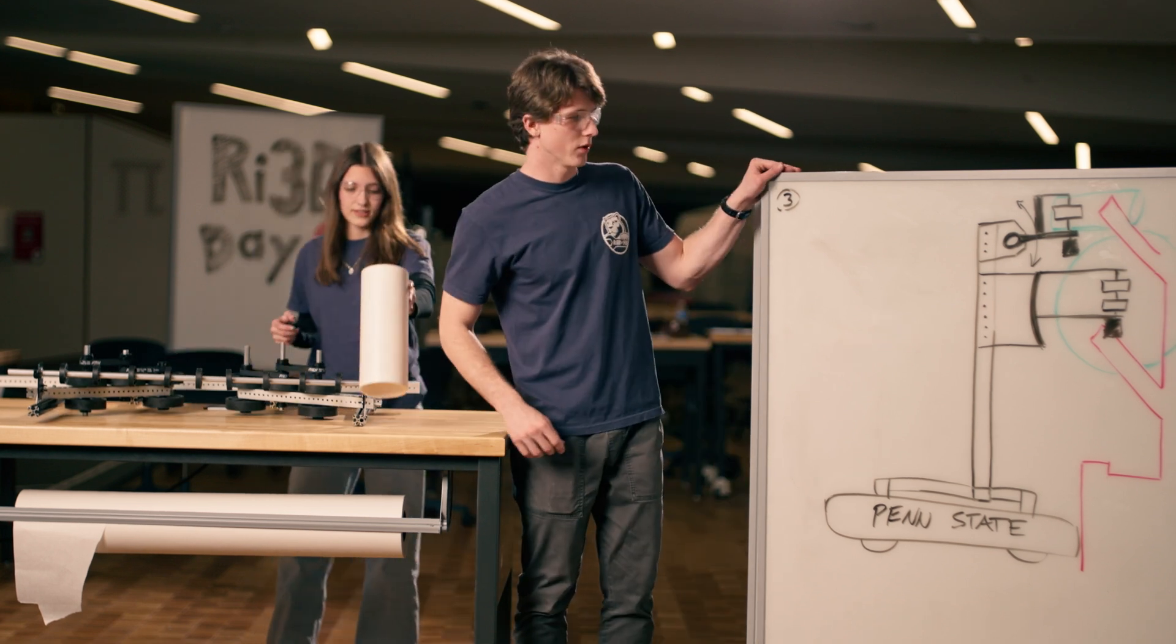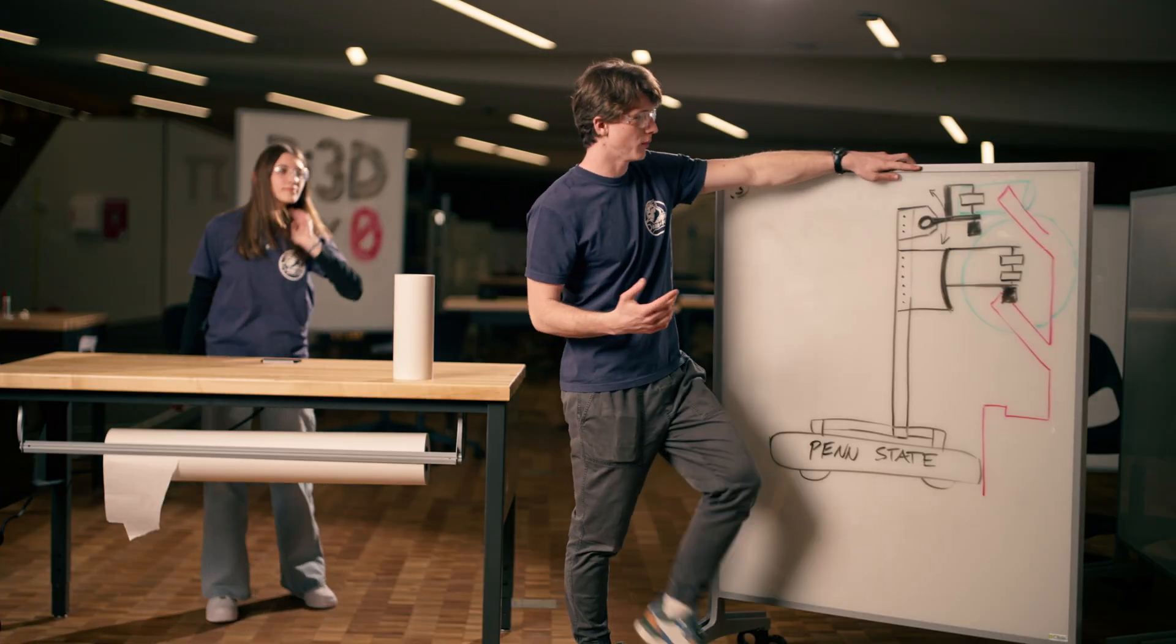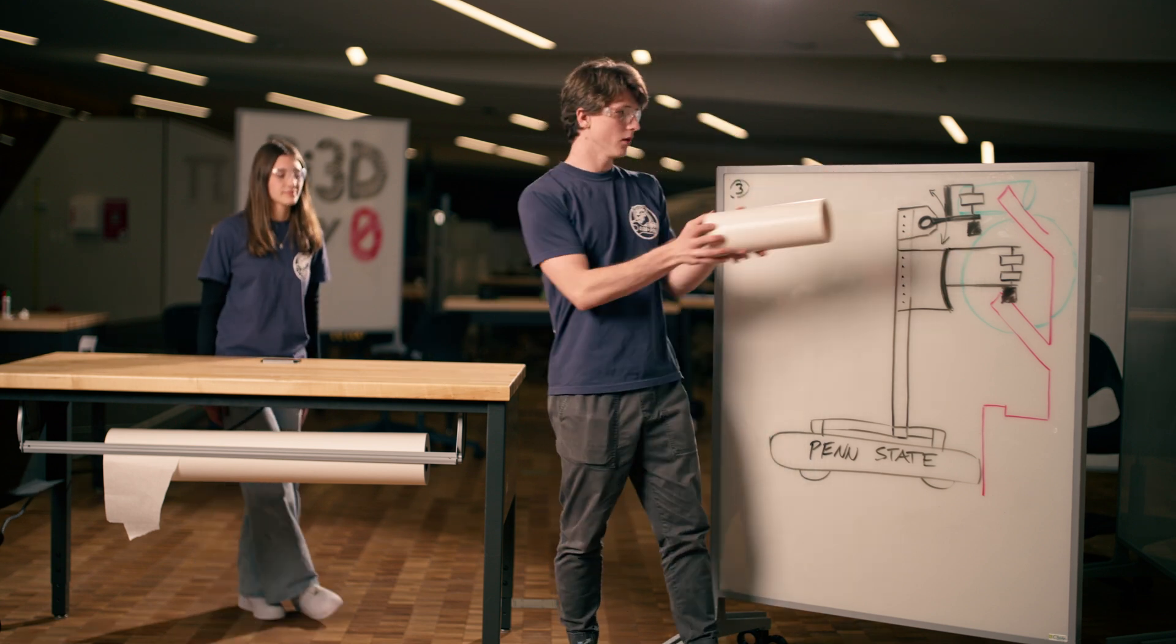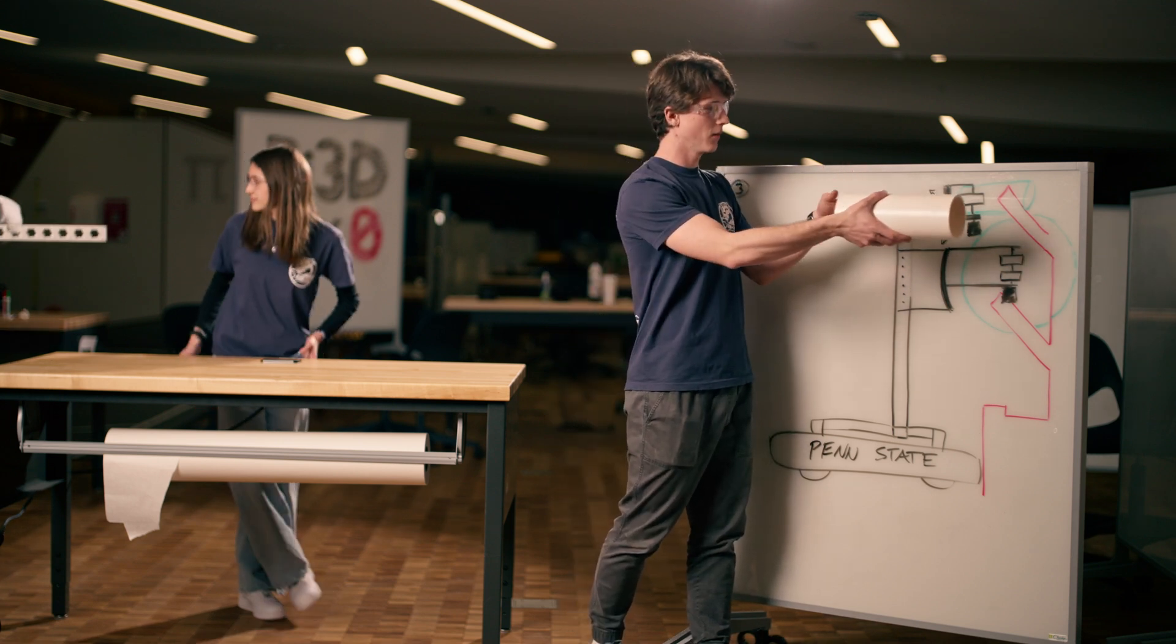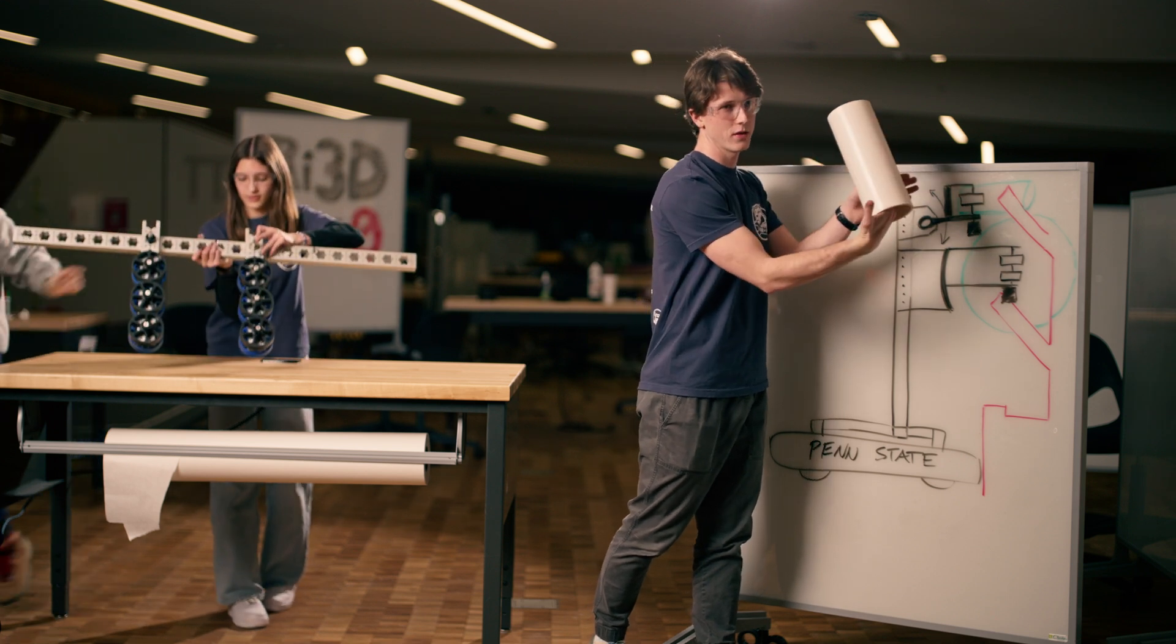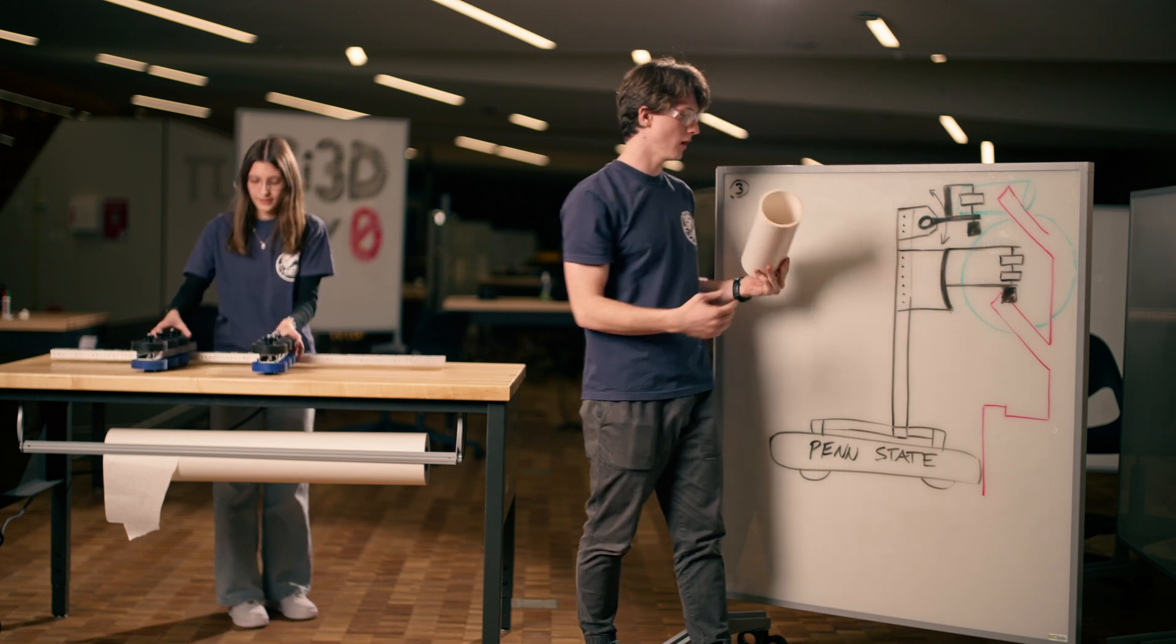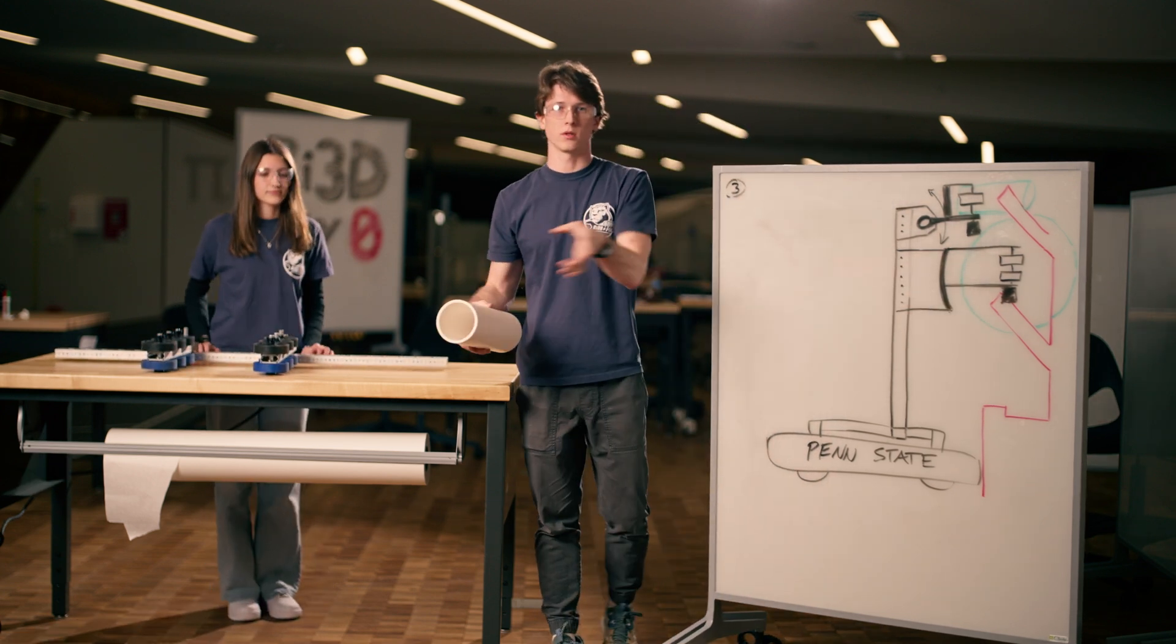Next up, we have two different prototypes here. Our third and fourth prototypes that we'll be testing tomorrow are a very simple coral intake and a very simple algae intake. The coral intake idea is that we can intake it horizontally with one roller and a wall on the backside, then be able to run into the reef and passively deploy this by just running into it at a correct angle where the reef will pull the coral out of the robot. The algae intake is pretty self-explanatory: two rollers on each side.